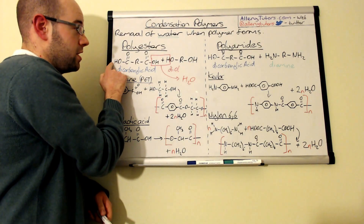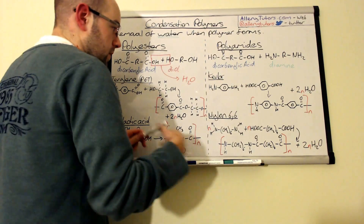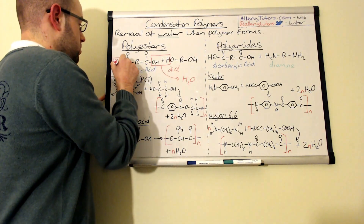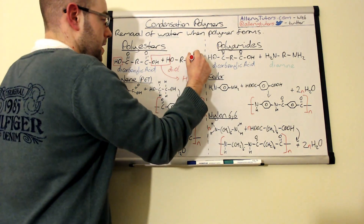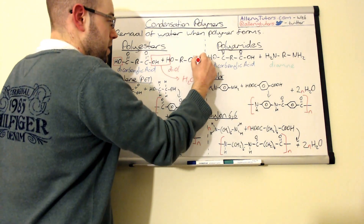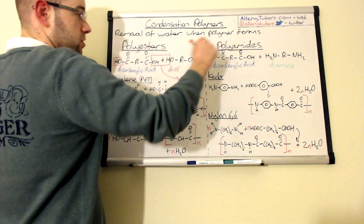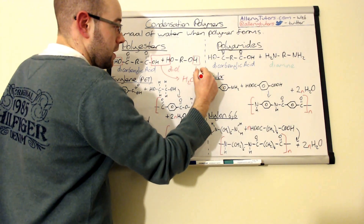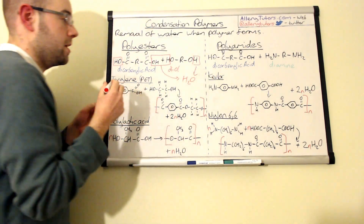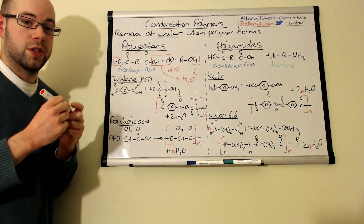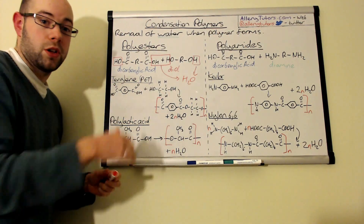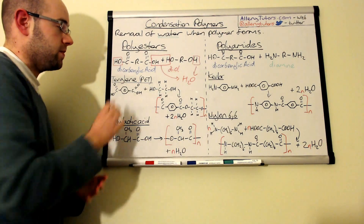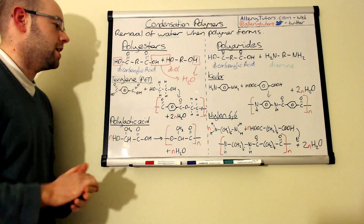For each join, you actually form two molecules of water — one from each end where the polymer extends. So when it joins onto other polymer units, you get two molecules of water produced per repeat unit formed.